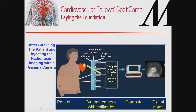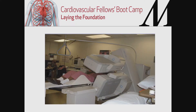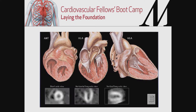After injecting the patient with a radiotracer and subjecting them to a stress modality — exercise or vasodilators — the nuclear camera, composed of a sodium iodide crystal and a lead collimator, collects the photons emitted from radioactive decay of the injected tracer. All those counts are digitized to produce a digital image. Most cameras have two heads and rotate around the patient in a 180-degree arc to collect all emitted photons.